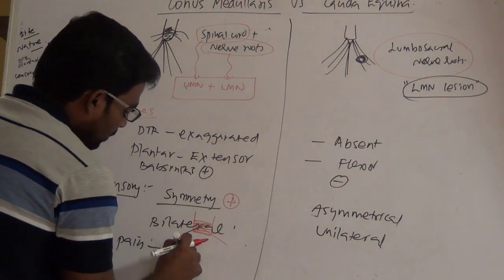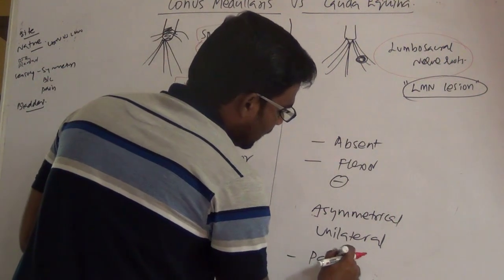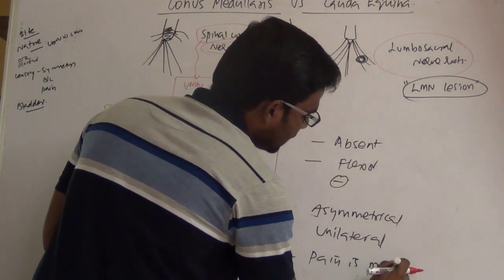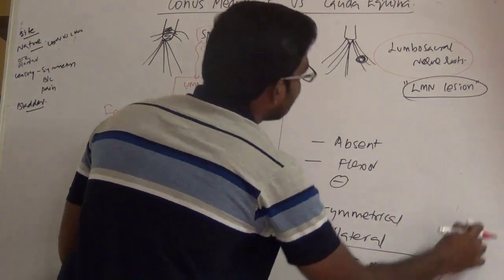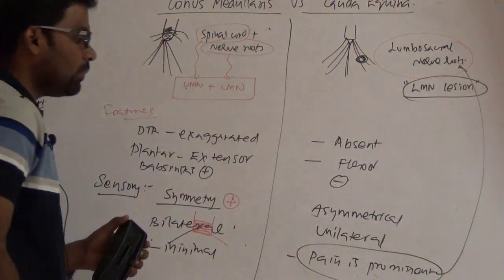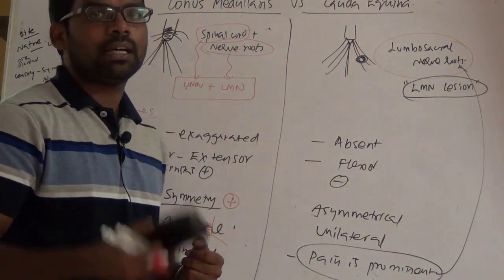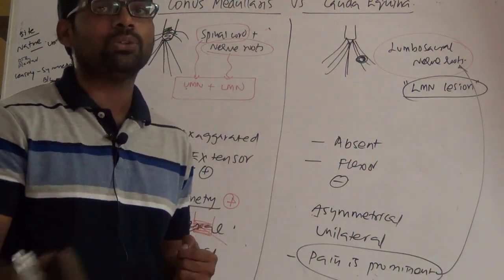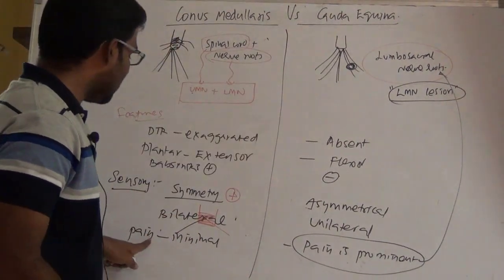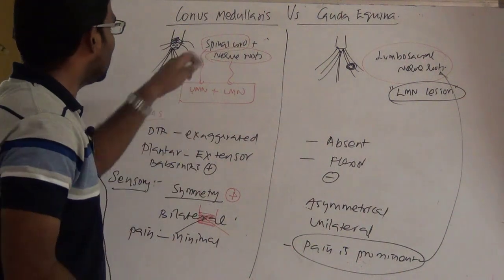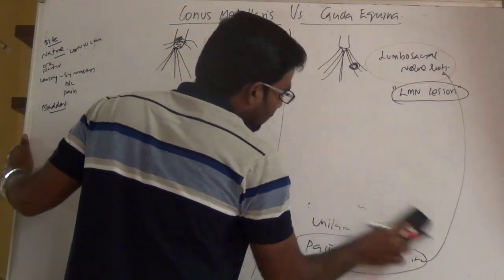Pain is minimal in patients with conus medullaris. In contrast, pain is a prominent feature in cauda equina because it involves the nerve roots — the more nerve roots involved, the more the pain. The pain in cauda equina is radiating in nature, following the distribution of the nerve roots.